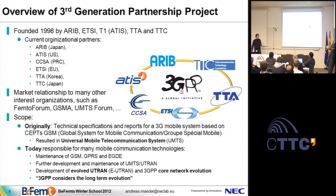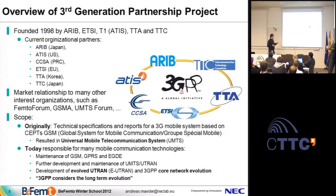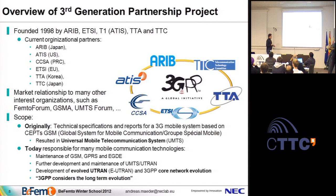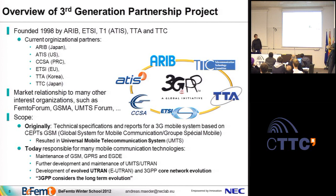The scope of 3GPP was originally to specify a 3G system — hence the name Third Generation Partnership Project — which resulted in UMTS, the Universal Mobile Communication System, based on wideband CDMA. Today 3GPP is responsible for all communication standards inherited from ETSI, including GSM, GPRS, and EDGE, plus maintenance of UMTS and UTRAN, ongoing developments in HSPA, and all development of the Evolved UTRAN, which is basically LTE. LTE is the evolved UTRAN and the 3GPP core network evolution, also called System Architecture Evolution — it's the whole process of improving 3GPP technology, not just a single release.